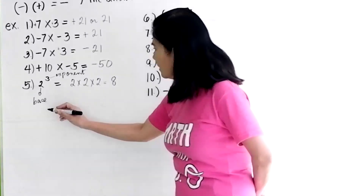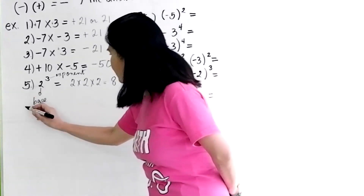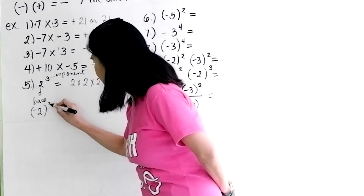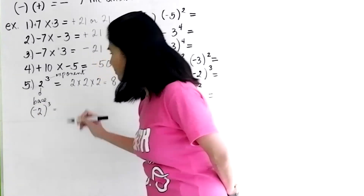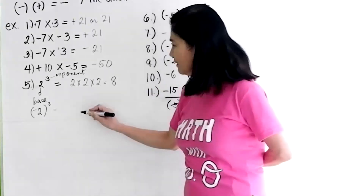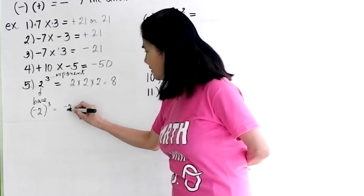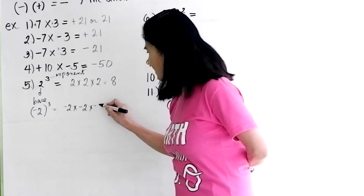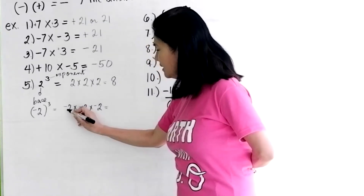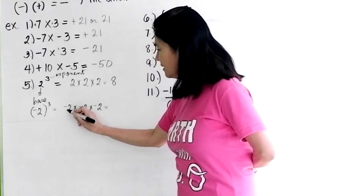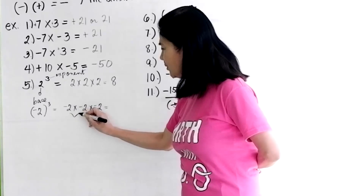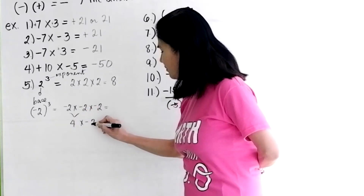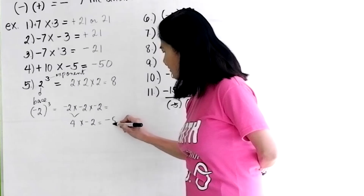What if we have negative 2, quantity cubed? You'll have negative 2 times negative 2 times negative 2, which gives you negative 8.